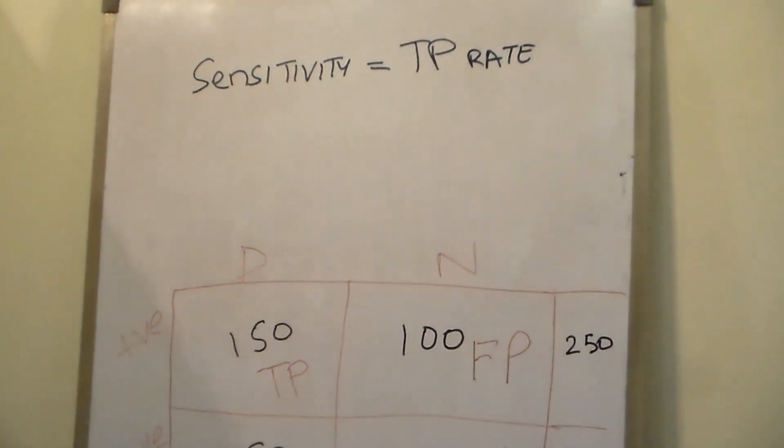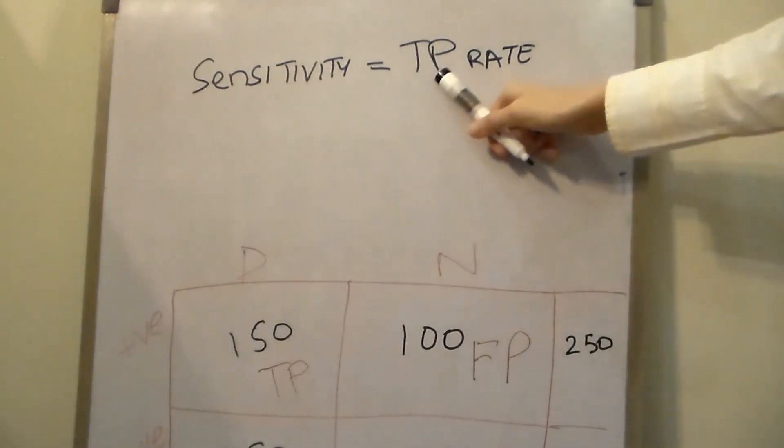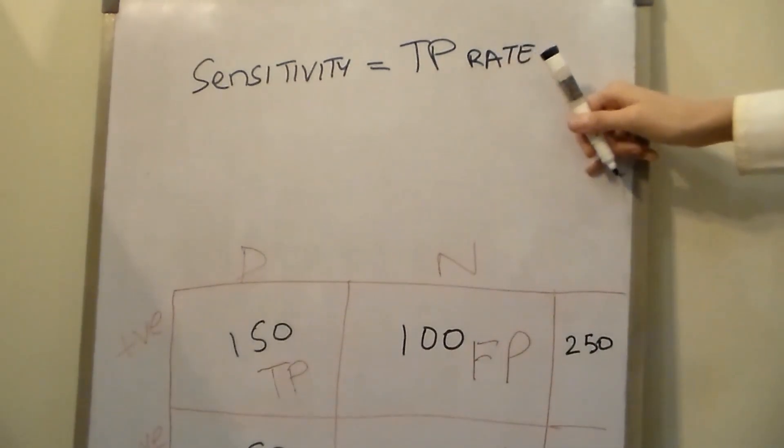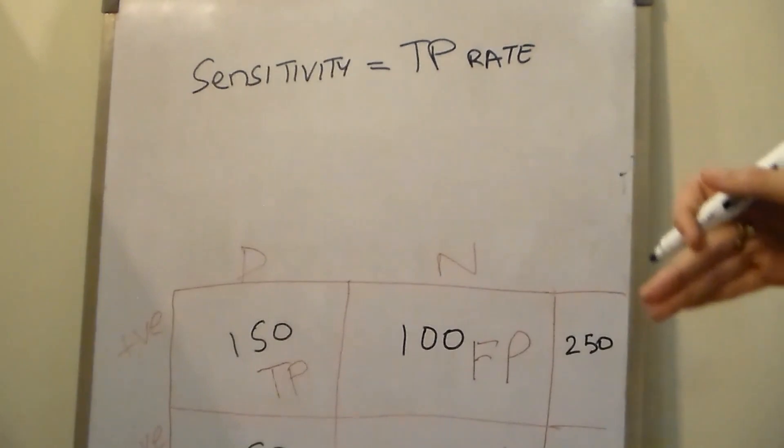Now let's talk about sensitivity. Another name for sensitivity is the true positive rate. It's the number of people who tested positive for the disease out of the total number of people who did have the disease.